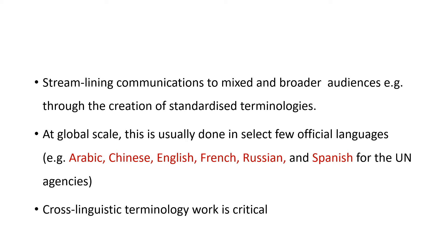The UN has six official languages: Arabic, Chinese, English, French, Russian, and Spanish. This means that when standardization is taking place, these languages are used. For information to flow to other, non-official languages, translation must be involved. This is a cross-linguistic activity, which means that cross-linguistic terminology work has to be given a lot of attention — it is a critical tool for making sure that information developed at the UN is able to flow to these other non-official languages.